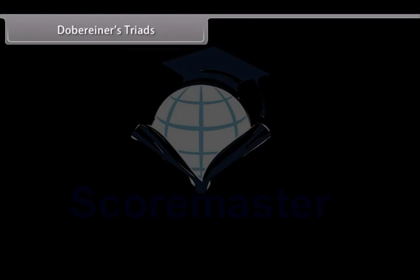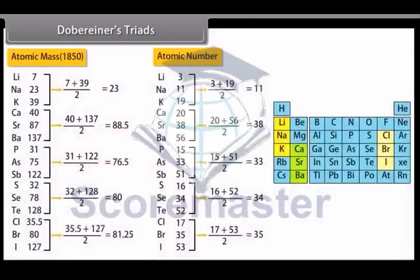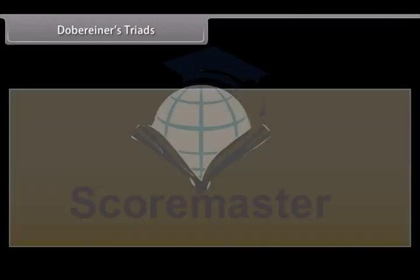Dobereiner's Triads. In 1829, Dobereiner, a German scientist, made groups of three elements each based on their properties. He named them Triads. He observed that atomic mass of the middle element of a triad was equal to the arithmetic mean of atomic masses of other two elements.